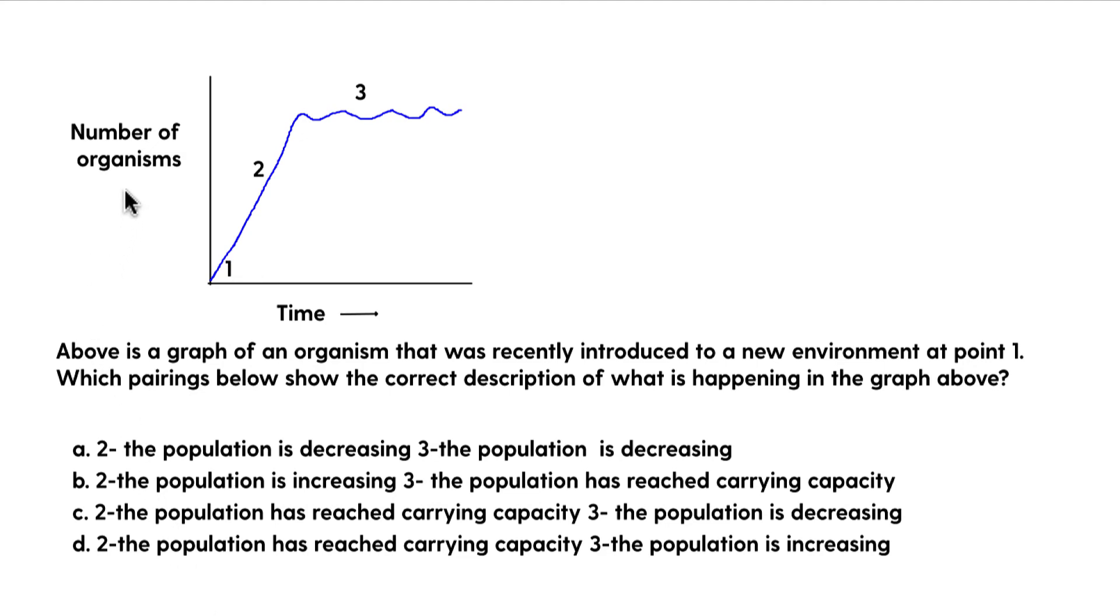So on the y-axis you have the number of organisms and on the x-axis you have time. And so you have a line going up and then it's kind of going up and down. If you look at the answer choices you have whether or not the population is increasing, decreasing, and then this notion of carrying capacity.